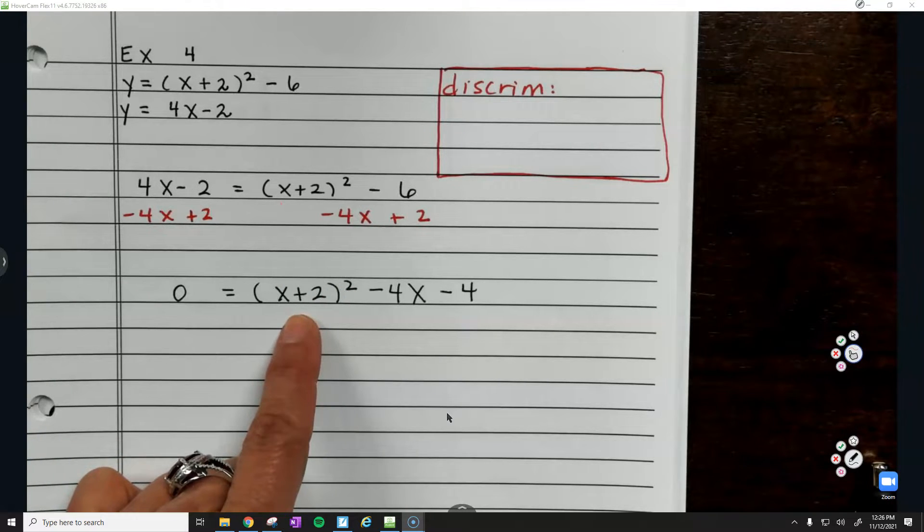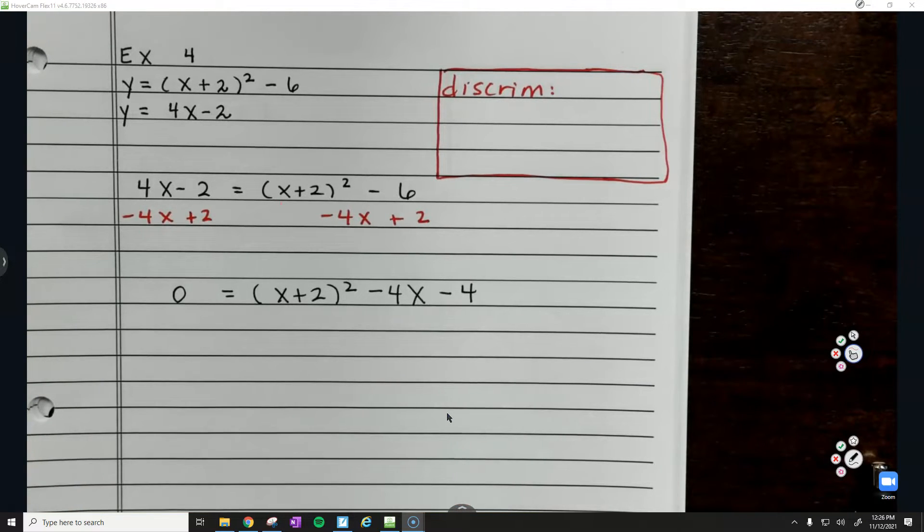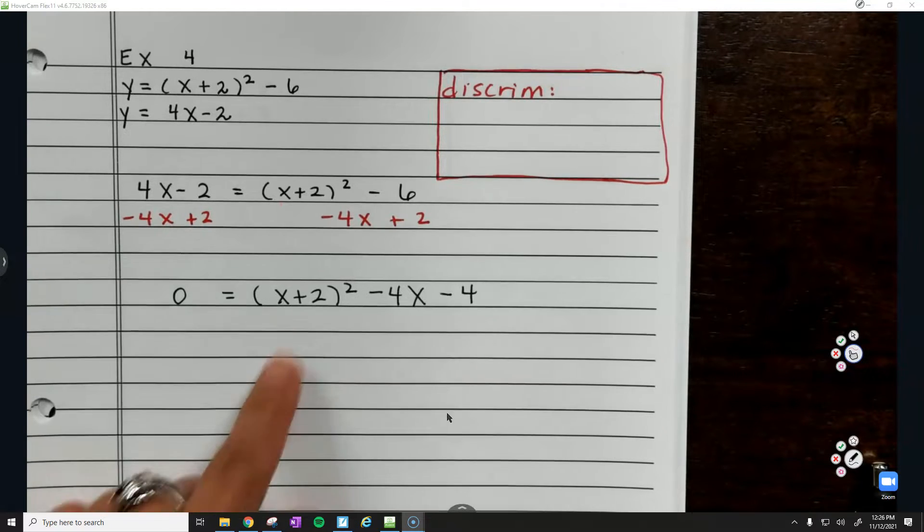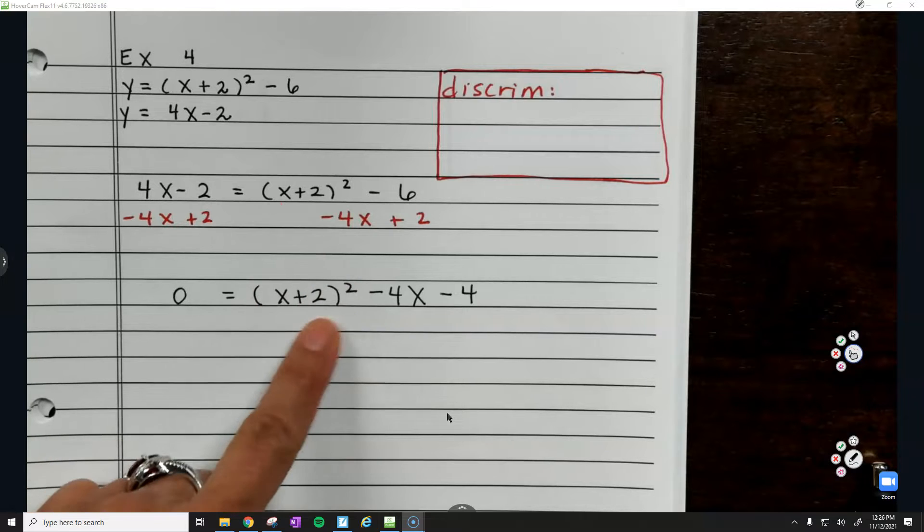Remember, this is already factored. But I can't solve when x is written more than once. x is written twice here. You've got to get this x out of parentheses. How can I get that out of parentheses?